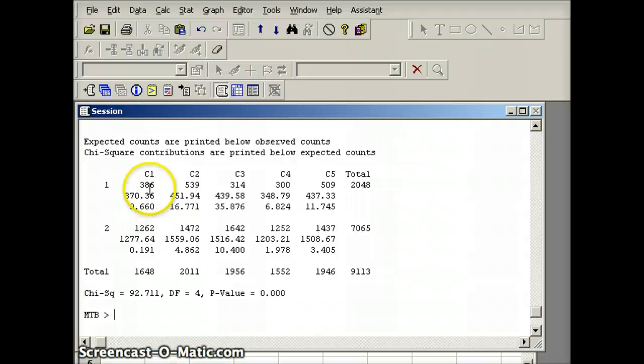Number 1, observed and expected just off by 16. But number 2, school 2, observed and expected very different. School 3, observed and expected off by 100. School 4, observed and expected off by 48. School 5, observed and expected off by another considerable margin.